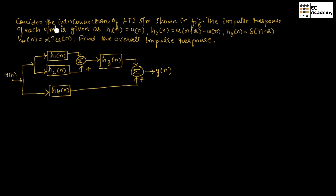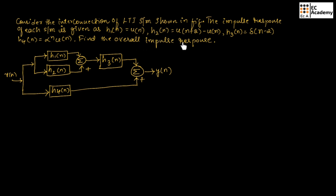Let us consider the interconnection of LTI systems which is shown in this figure. The impulse response of each of the systems is given. Here, they have given H1 of n, H2 of n, H3 of n, and H4 of n. We need to find the overall impulse response.